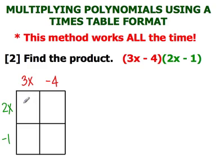Therefore, 2x times 3x will give us 6x squared. 2x times negative 4 will give us negative 8x. Negative 1 times 3x will give us negative 3x. Finally, negative 1 times negative 4 will give us a positive 4.